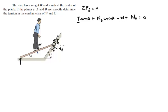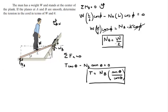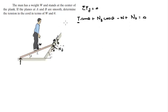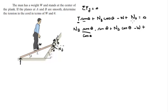I'm going to replace the tension with the expression found before, and replace NA with W/2. So the equation becomes: NB·sin(theta)/cos(theta) · sin(theta) plus NB·cos(theta) plus W/2 equals 0. Passing W/2 to the other side and factoring out NB gives: NB · [sin²(theta)/cos(theta) + cos(theta)] = W/2.